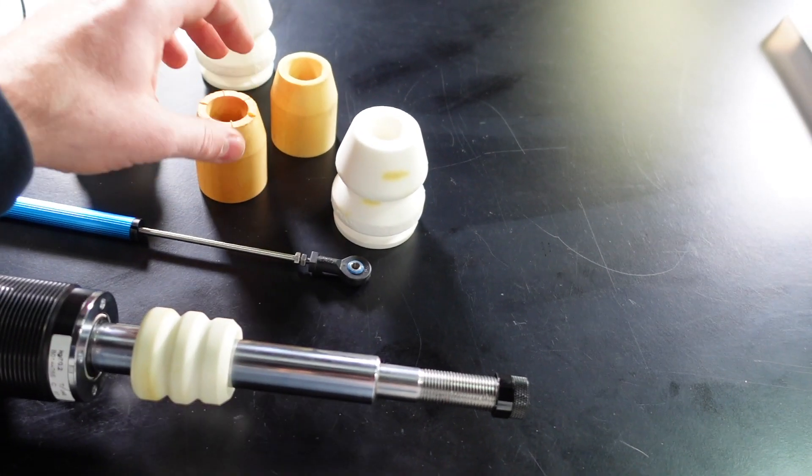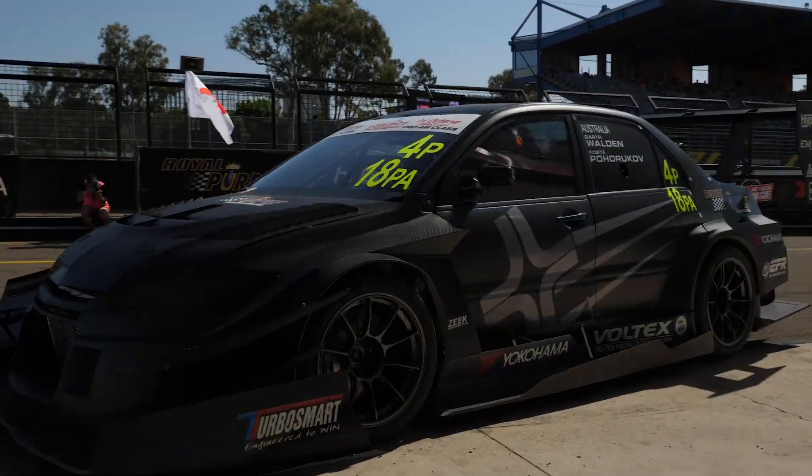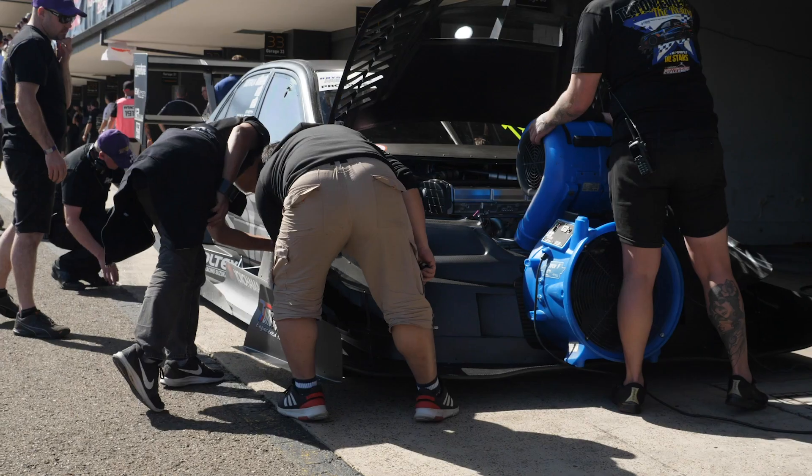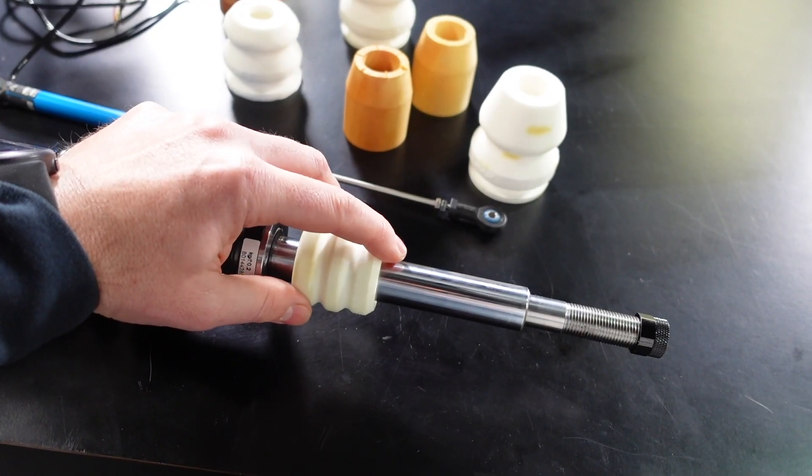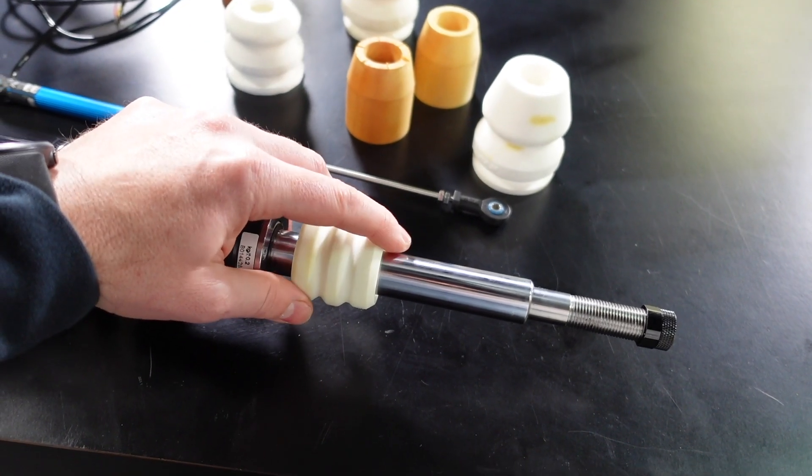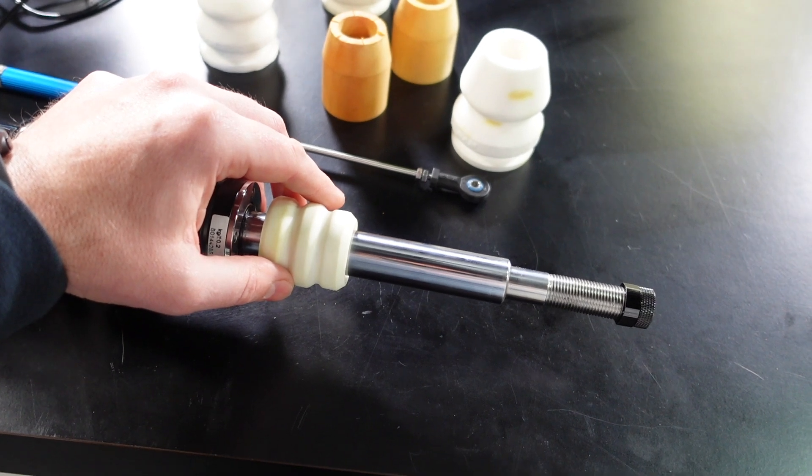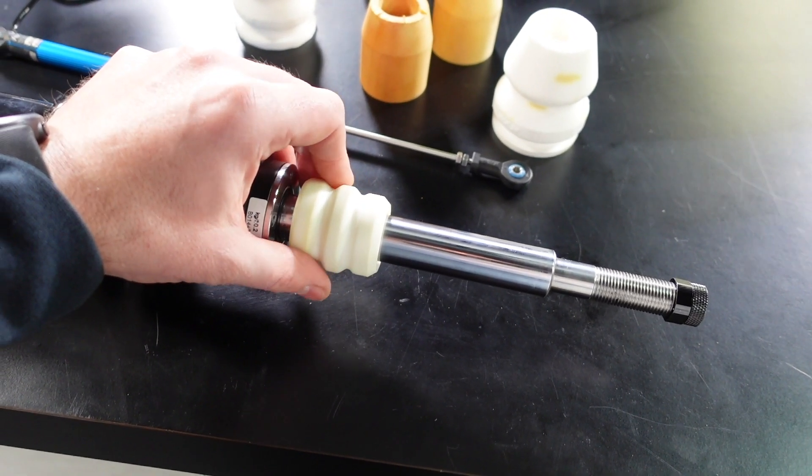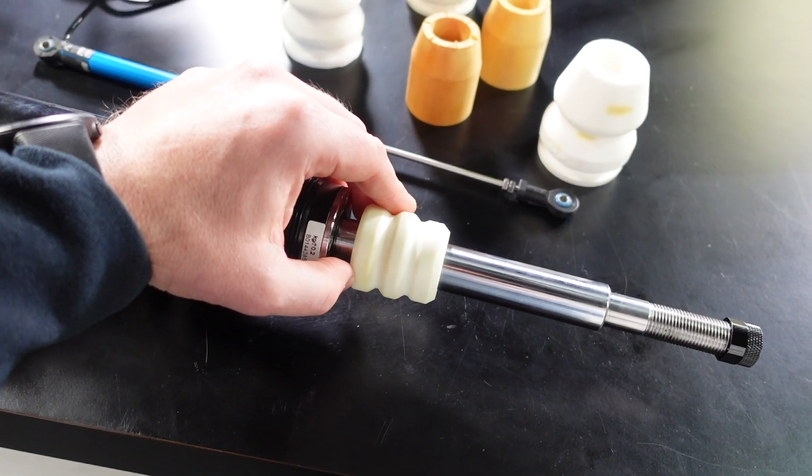In high downforce applications such as GTs, prototypes and things like time attack cars, this bump stop gap is really critical because it controls, it has a large bearing on the ride height. A difference in ride height of plus or minus a millimetre makes a measurable difference to the downforce. It really is that important, particularly at the front of the car.